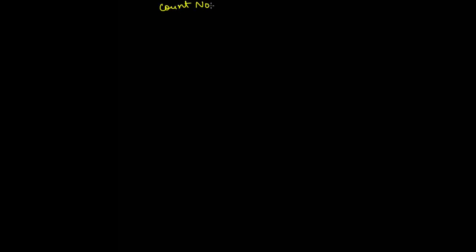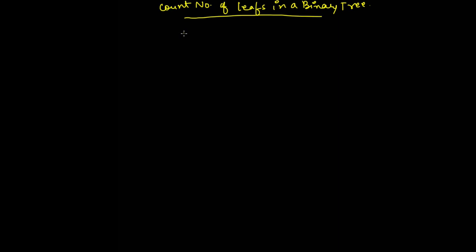The next program is: given a binary tree, count the number of leaves. To identify whether a node is a leaf or not, we check if it has no left child and no right child. If any node does not have a left and right child, then only that node is a leaf node; otherwise it is not a leaf node.